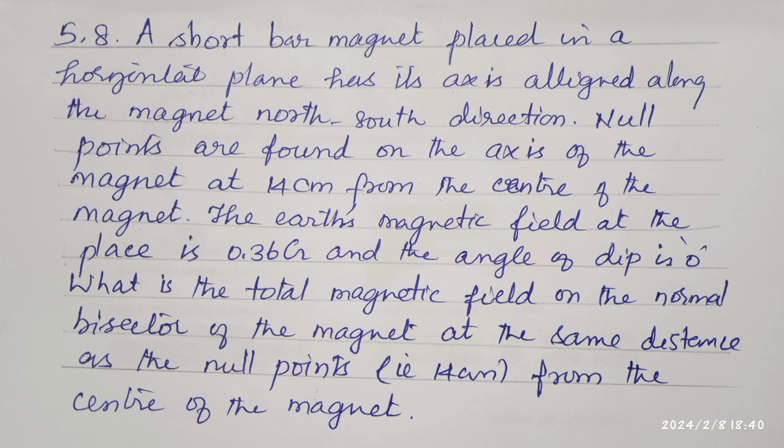What is the total magnetic field on the normal bisector of the magnet at the same distance as the null points, that is 14 centimeter from the center of the magnet?